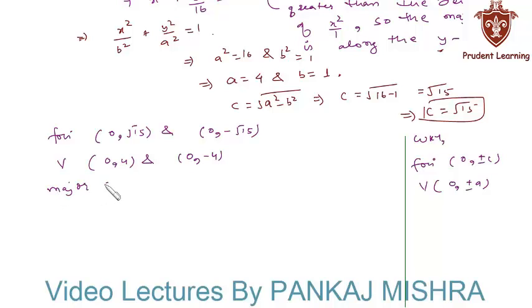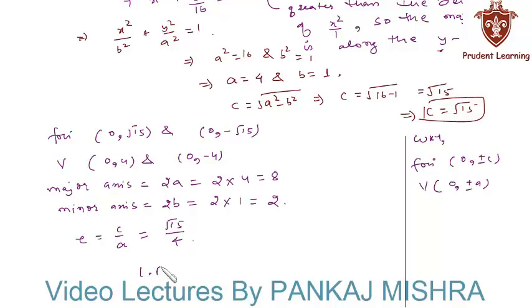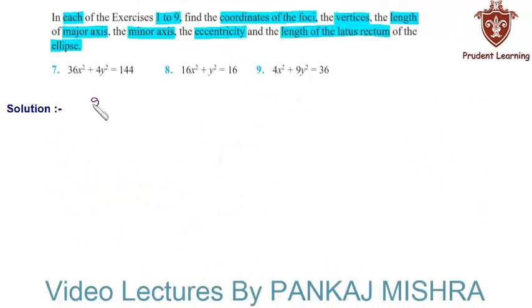Length of major axis is equal to 2a, that is 2 × 4 = 8. Length of minor axis is equal to 2b, that is 2 × 1 = 2. Eccentricity is equal to c/a, so substituting the values we have √15/4. Finally, length of latus rectum is equal to 2b²/a = 2 × 1/4 = 1/2. This completes our solution.